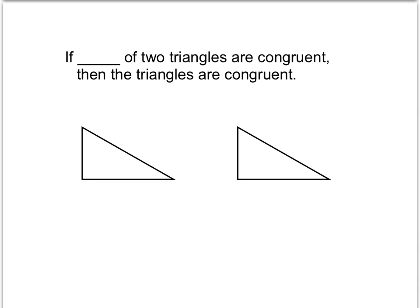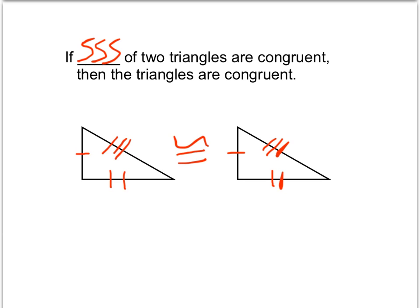One of the theorems we have to prove that triangles are congruent is called the SSS theorem. If we can prove that these segments are congruent, that these segments are congruent, and that these segments are congruent — if we can prove those three pairs of segments are congruent, then we can guarantee those two triangles are congruent. That's called SSS, or side-side-side.